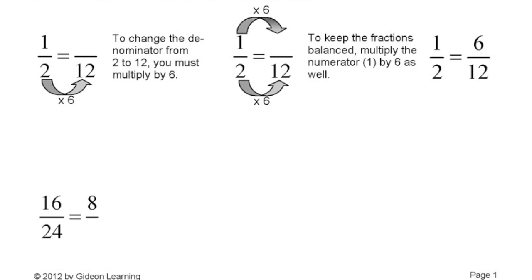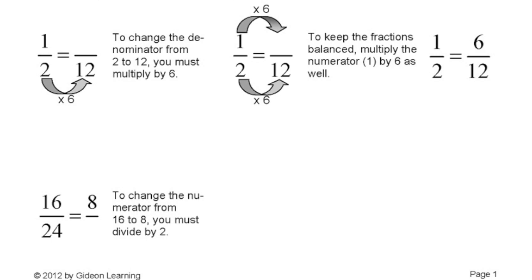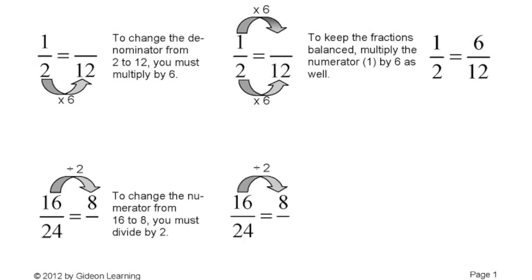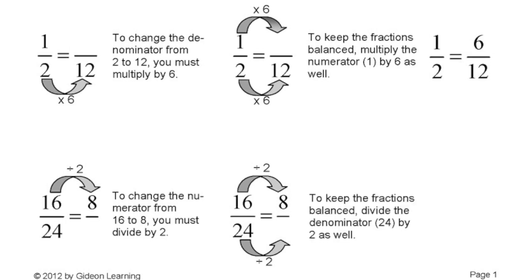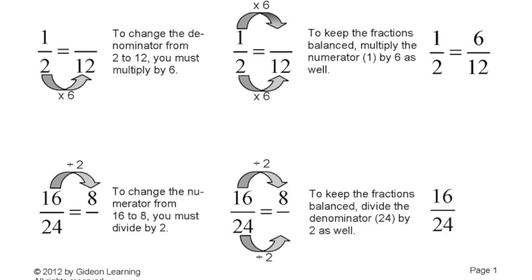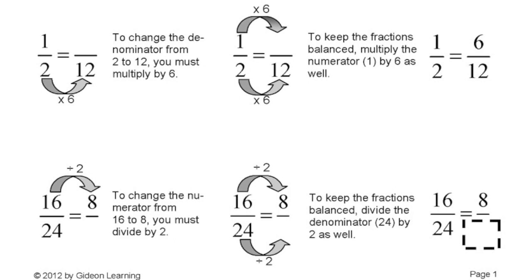16 divided by blank gives me 8. 16 divided by 2. So if I had to do 16 divided by 2 to give me 8, I'm going to also need to do 24 divided by 2. Because that's basically whatever I do to one side, whatever I do to the top, I must do the bottom, and vice versa. So I'm going to get 16 divided by 24 is equal to 8 over 12.